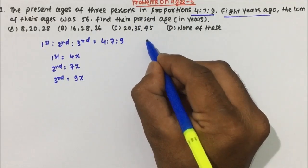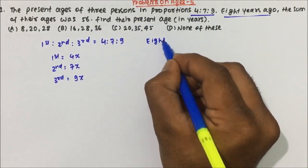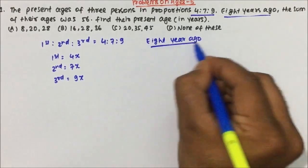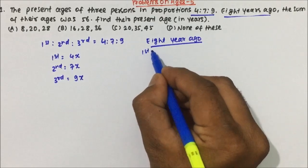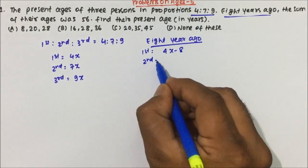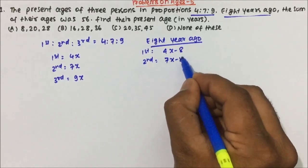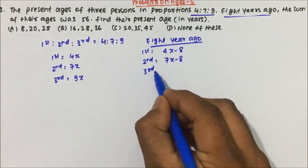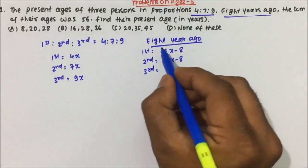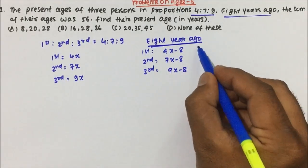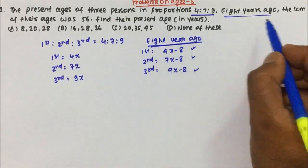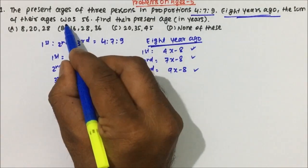Eight years ago the sum of their ages was 56, so first we will calculate the ages eight years ago. Eight years ago, the age of the first person will be 4x minus 8, the age of the second person will be 7x minus 8, and the age of the third person will be 9x minus 8.